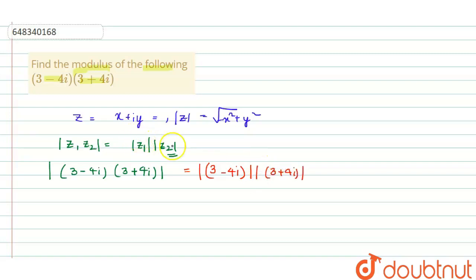Applying the above identity, it will be square root of 3 squared plus 4 squared times square root of 3 squared plus 4 squared. So it will be root 9 plus 16, that is root 25 times root 25.